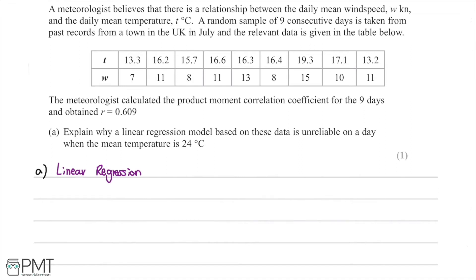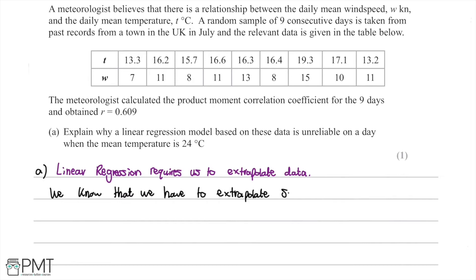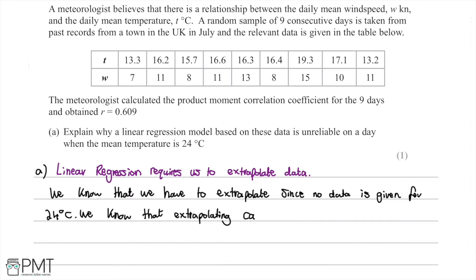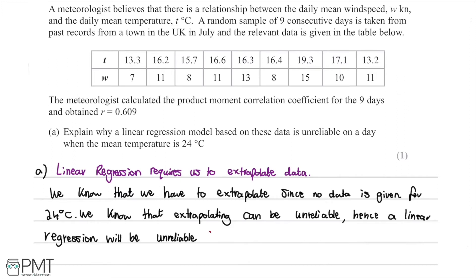Linear regression requires us to extrapolate data when making predictions beyond the given data, and this is something we know is unreliable. Since no data is given for 24 degrees Celsius, we know that extrapolating can be unreliable, hence a linear regression model will be unreliable here. There was one mark available and we received it for stating that extrapolating is unreliable.